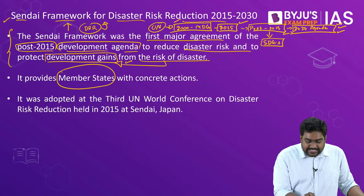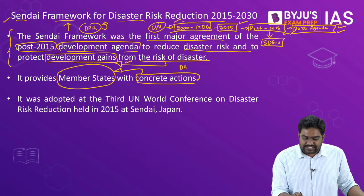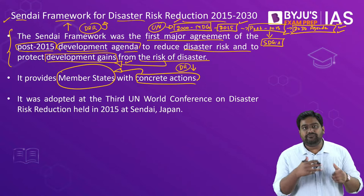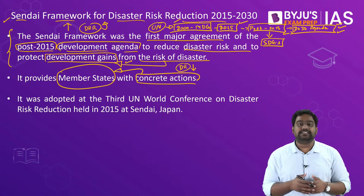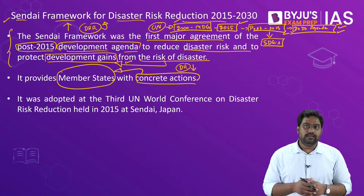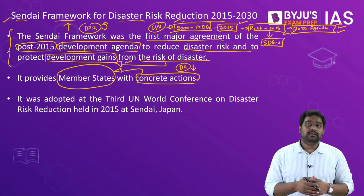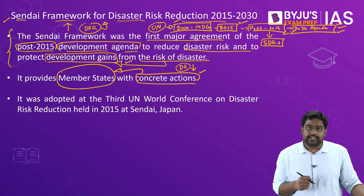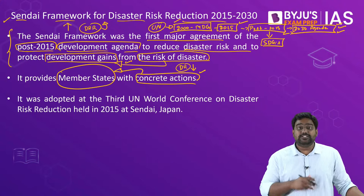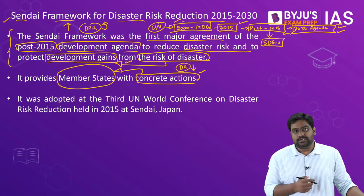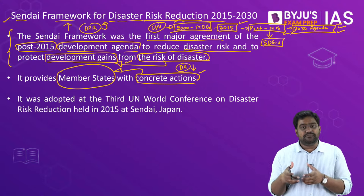This framework provides a set of targets, action plans, and concrete actions to be followed by member countries so that they can reduce disaster risk in their respective countries and protect all the developmental gains they had achieved from the potential threats posed by disasters. Any disaster, be it natural or man-made, causes immense damage to both life and property. Major disasters like cyclones, tsunamis, or earthquakes can set back a region in terms of its socio-economic development, so the need was felt for a global framework to focus on disaster risk reduction.